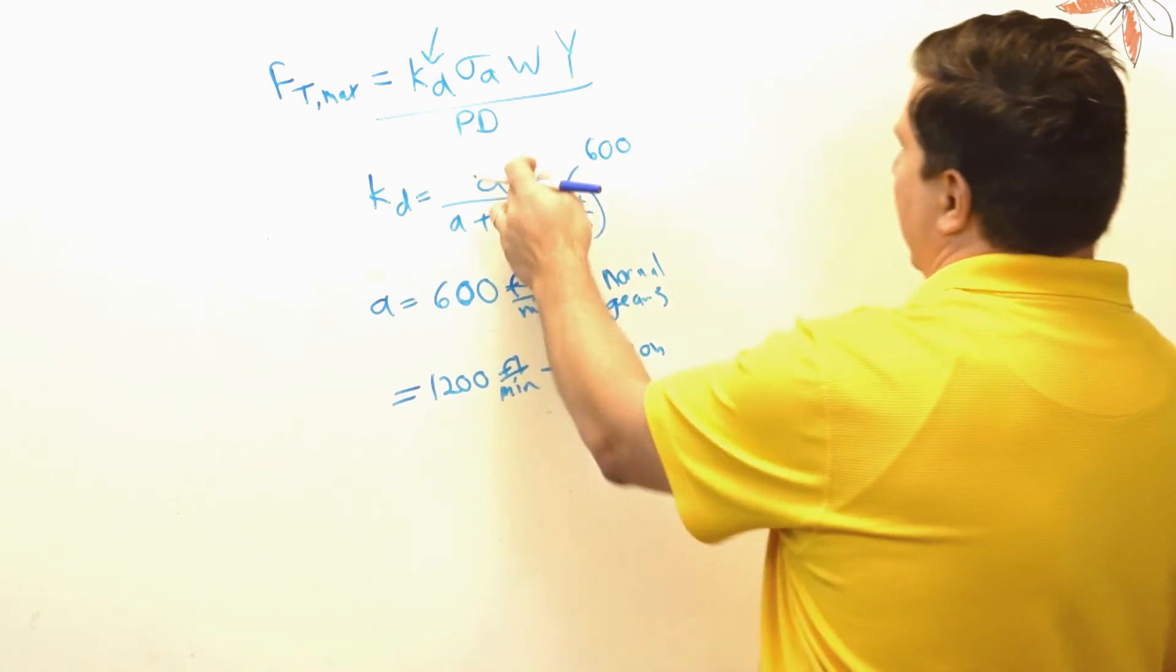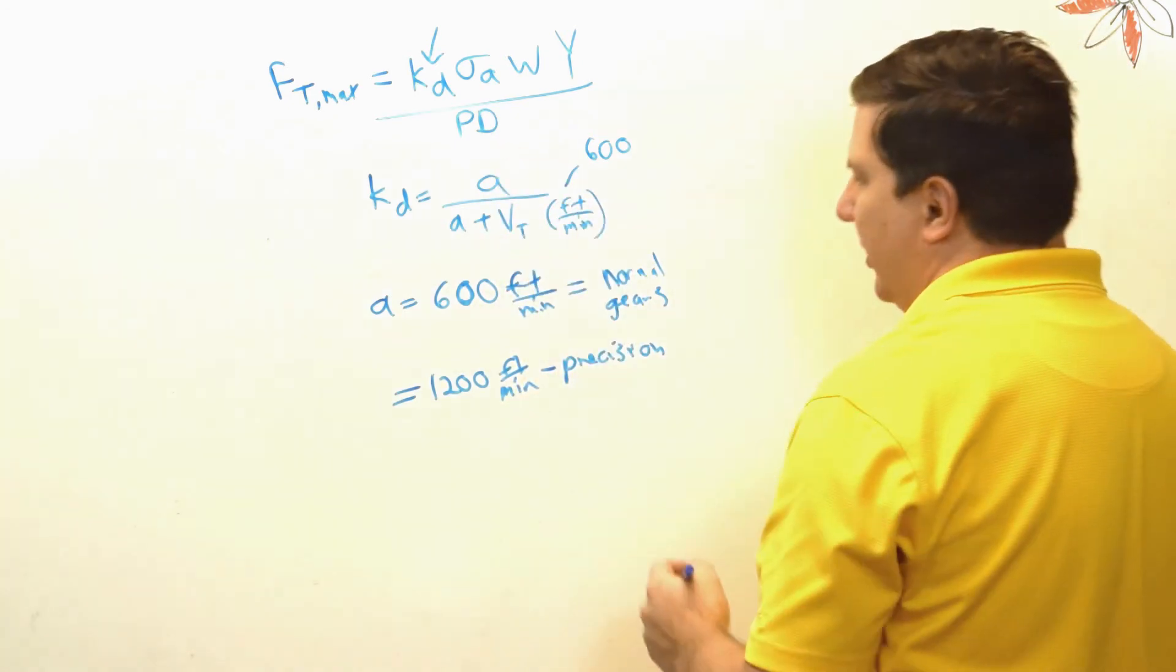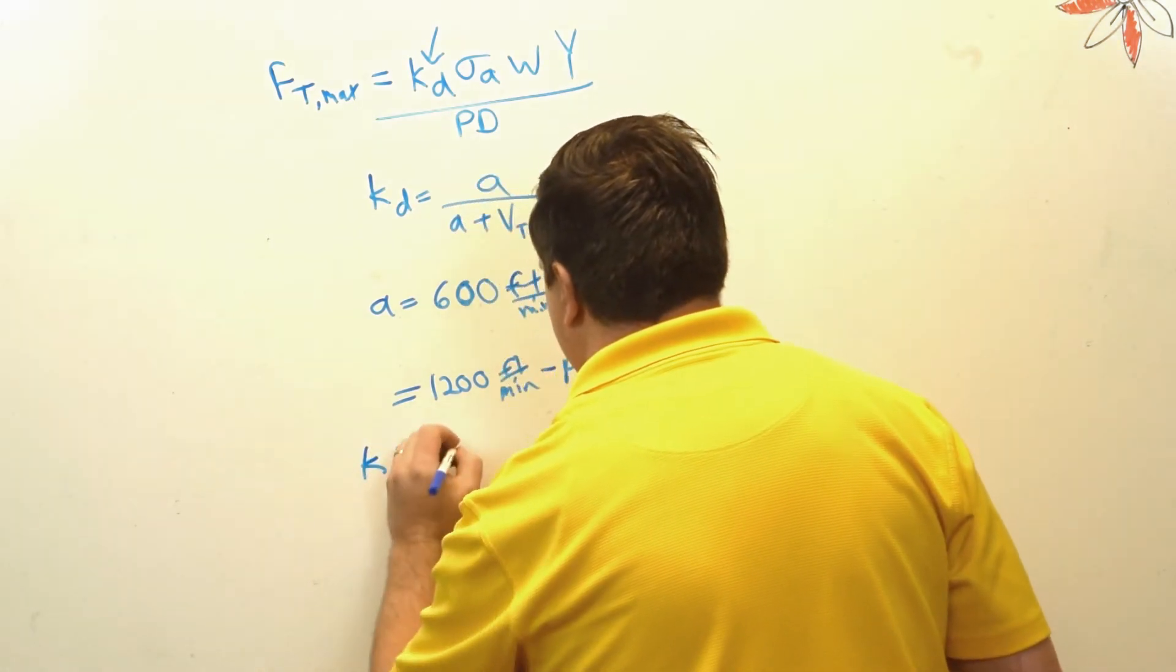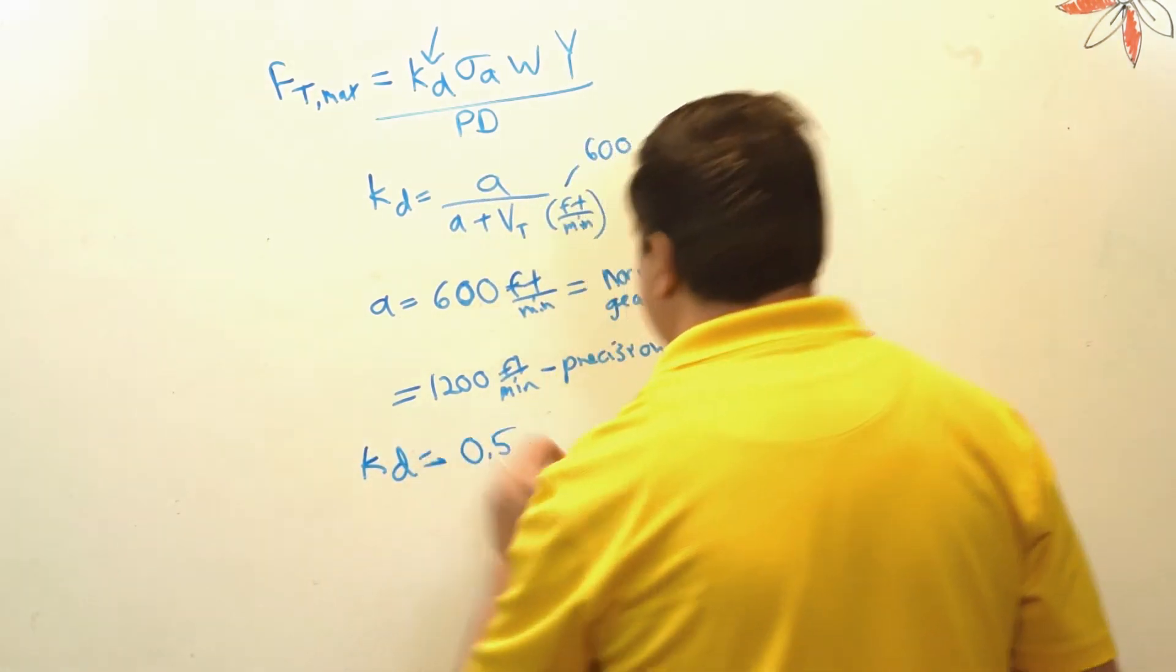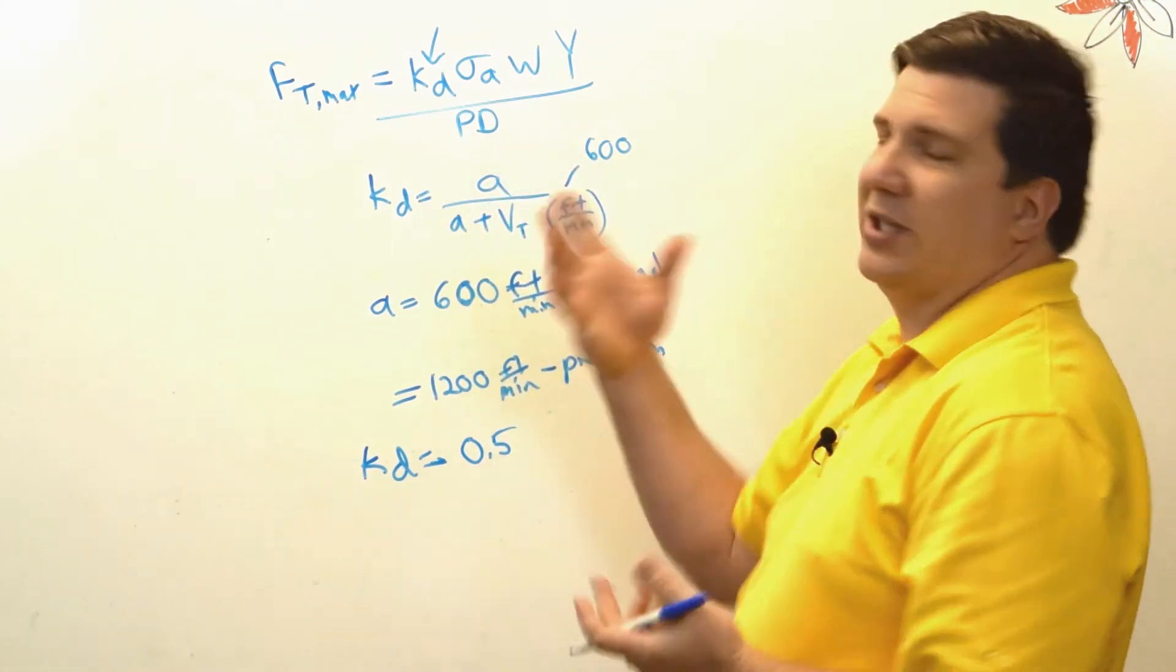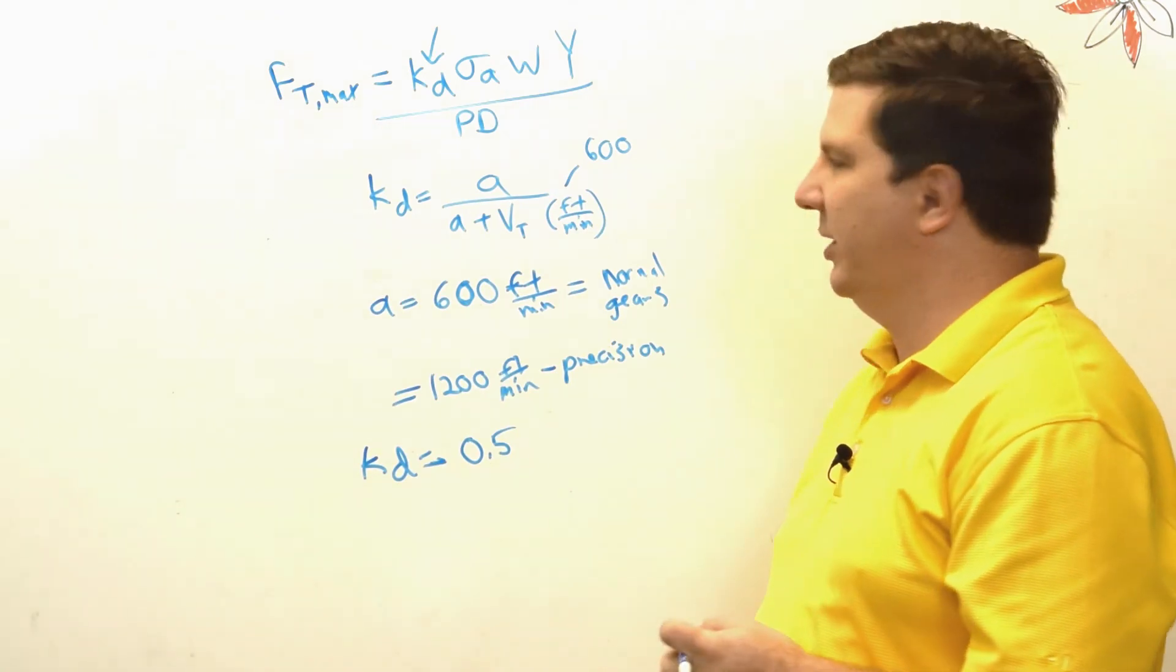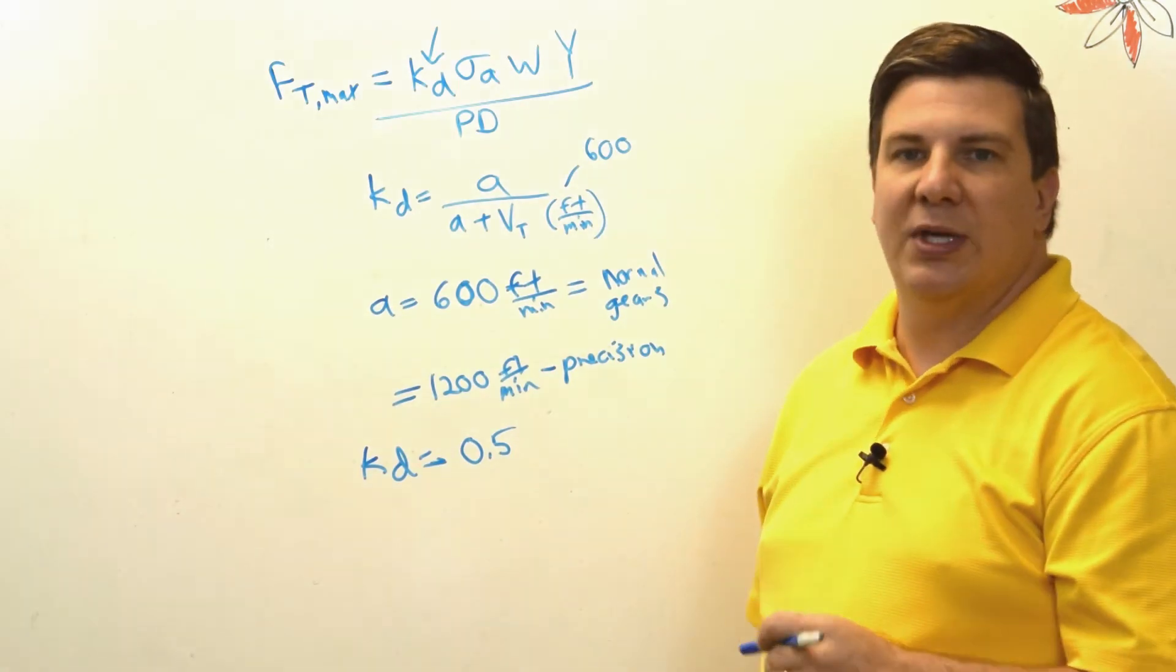We're going to get 600 over 1200, so our kd is going to be equal to 0.5. Quick example: we just cut our force in half.